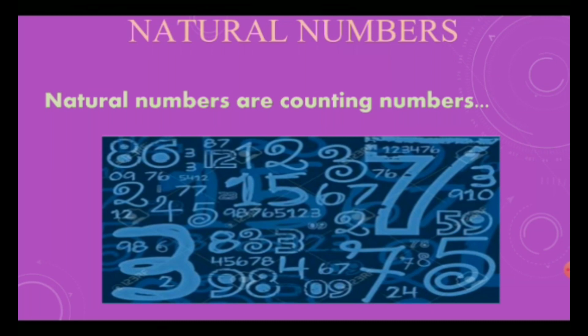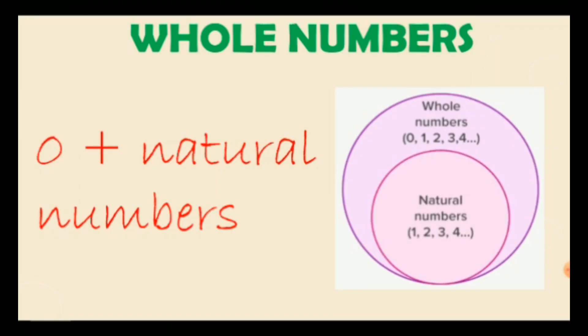Now comes the whole numbers. Here I wrote 0 plus natural numbers. Means whole numbers are the combination in which 0 and natural numbers combine together. Here I made a graph in which it is shown that natural numbers starts with 1,